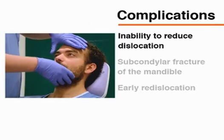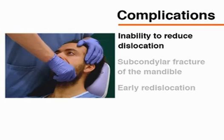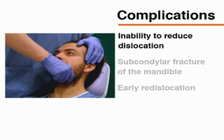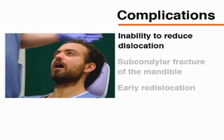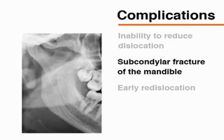Complications are uncommon in this procedure. The most frequent problem is the inability to reduce the dislocation. If the first attempt at reduction is unsuccessful, consider administering a mild sedative, such as diazepam, to relax the masticatory muscles. Another potential complication is a subcondylar fracture, which may occur if too much force is applied in a posterior direction during repositioning. The primary force should always be downwards.